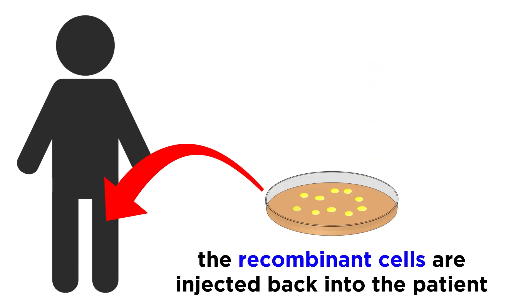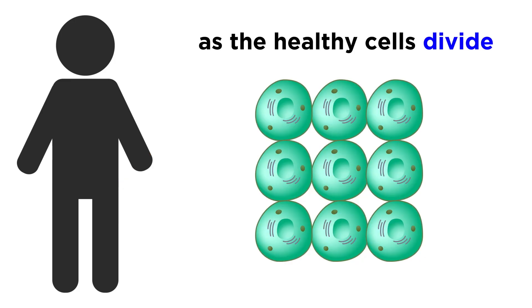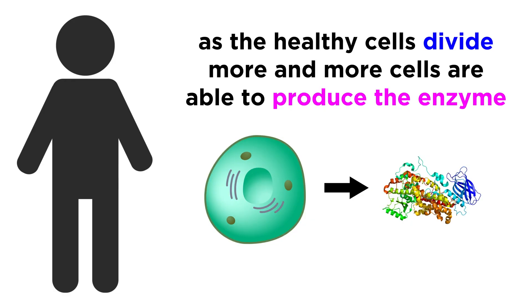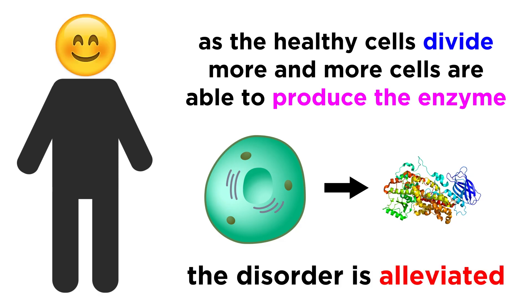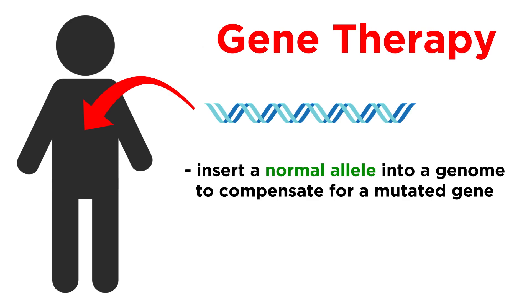These recombinant cells are then injected back into the bone marrow of the patient, and as these continually divide over an extended period of time, as bone marrow cells do, more and more cells have the capacity to produce the vital enzyme, and the disorder is alleviated. So as we just discussed, gene therapy can involve inserting a normal allele into a genome to compensate for the activity of a mutated gene.